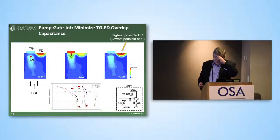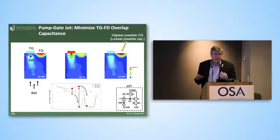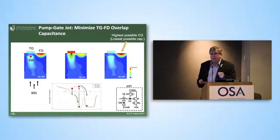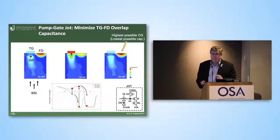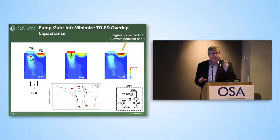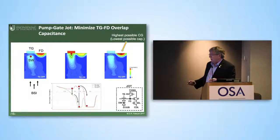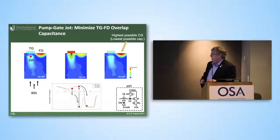How do we do that? We're going to do this at room temperature with no avalanche multiplication — so it's not like a SPAD or an EMCCD. This is kind of a brute force approach: we're going to make the capacitance so small on the sense node that putting one electron on that sense node will increase the voltage above the thermal background, and that's what we detect. We built a device we call a pump gate JOT, with the objective of minimizing the capacitance on the sense node.